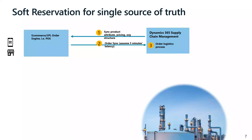Let's walk through a brief example. Say you have Dynamics 365 Supply Chain Management as your ERP — you may also have other ERPs, but we'll use D365 SCM as an example. This is the system that manages your master data, organization information, warehouses, and inventories, and also handles the logistics process of order processing. Then you have external order engines or channels — in this example, two channels: one is your e-commerce channel with access via a mobile app, and the other is the physical store channel.